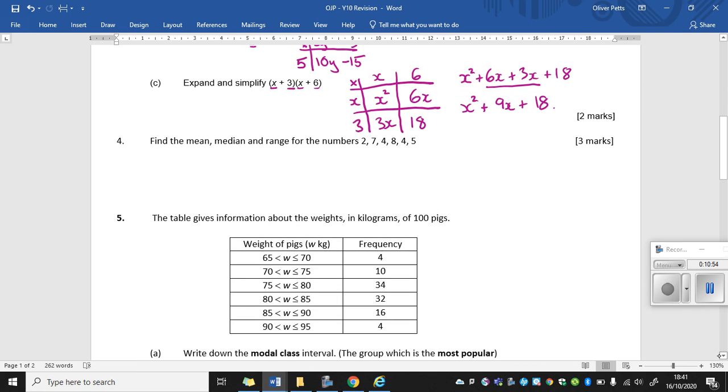OK, moving on to some averages and range now. So this question wants us to find the mean, median and range for the following numbers. So let's start with the mean. So to find the mean, we need the total divided by how many there are. So for the total, I need to add all the numbers together. And if we just work them out very carefully, so 2 plus 7 is 9. Add 4 is 13. Add 8 is 21. Add 4 is 25. And then add 5 is 30. So the total is 30.